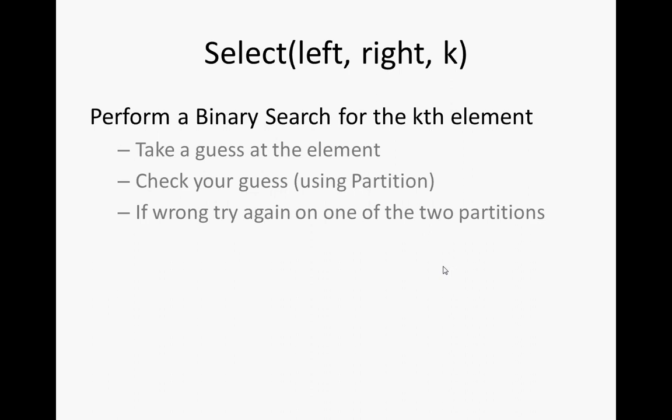What Select is actually doing is it's kind of performing a binary search for this kth element. To do that binary search, you take a guess at what element, take a guess somewhere within your bounds for that element. Check your guess, use Partition on whatever element that is, whatever element you guessed, and see where it ends up.